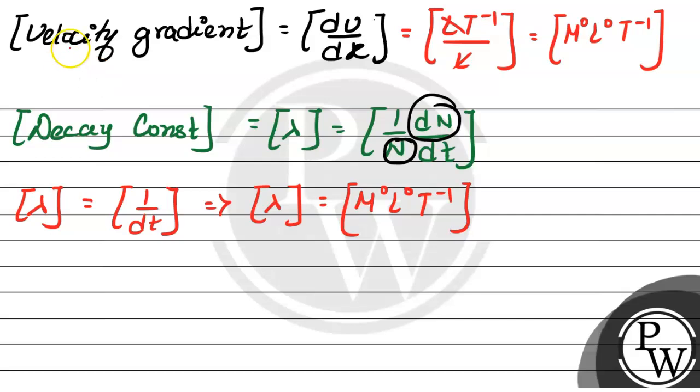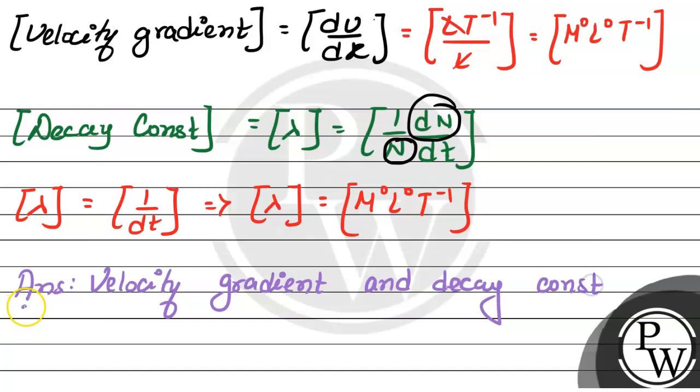I can see here that velocity gradient and decay constant are having the same dimensions. I can conclude that velocity gradient and decay constant have the same dimensions.